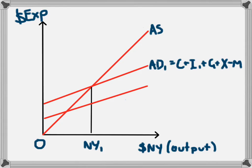This causes a movement from AD₁ to AD₂, where AD₂ equals C+I₂+G+X-M, with I₂ lower than I₁ due to higher interest rates. The amount by which investment falls is shown here.